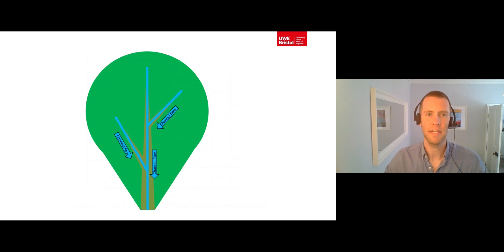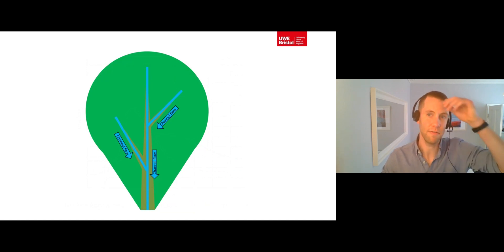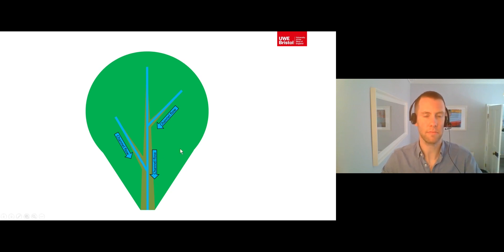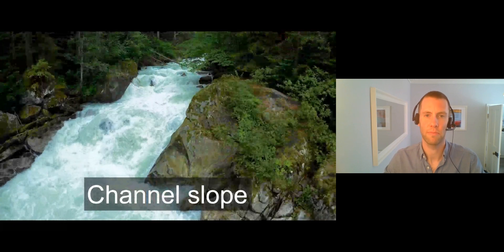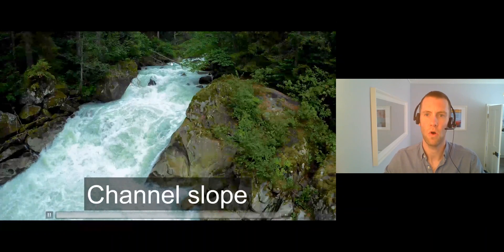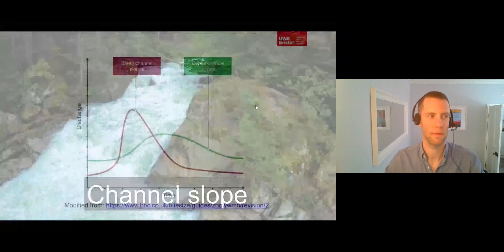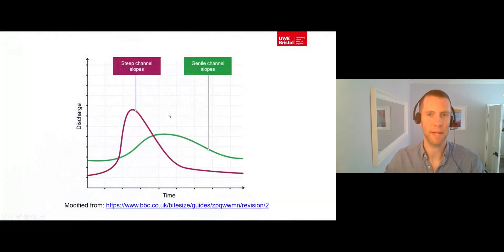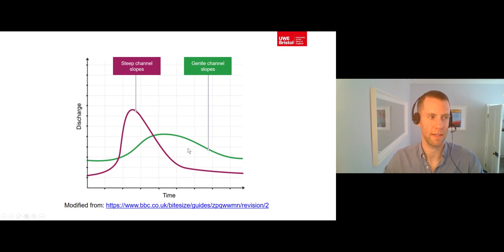Finally, let's consider natural factors that affect how flow is delivered from the drainage basin's river channel network. First, channel slope. Steeper river channels will travel water more quickly to the outlet. This means drainage basins with steeper river channels will have flashier hydrographs, and those with less steep river channels will have less flashy hydrographs.